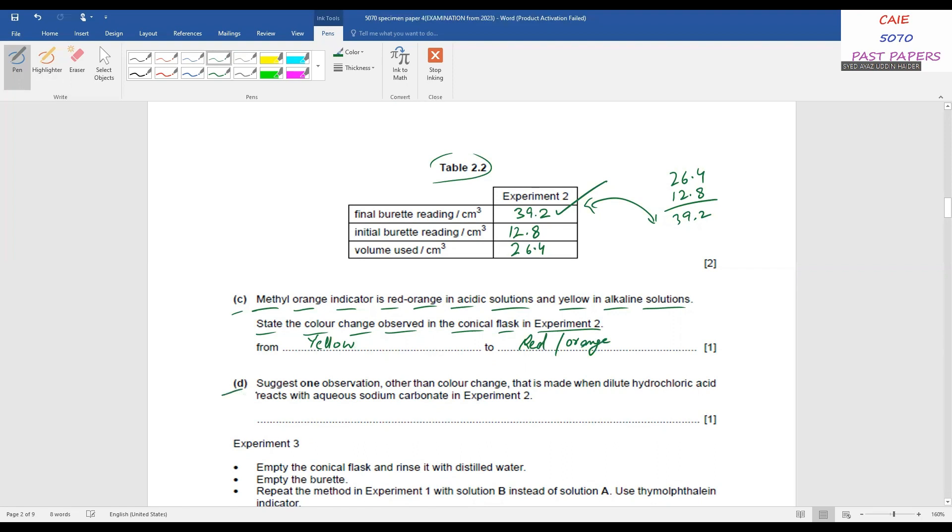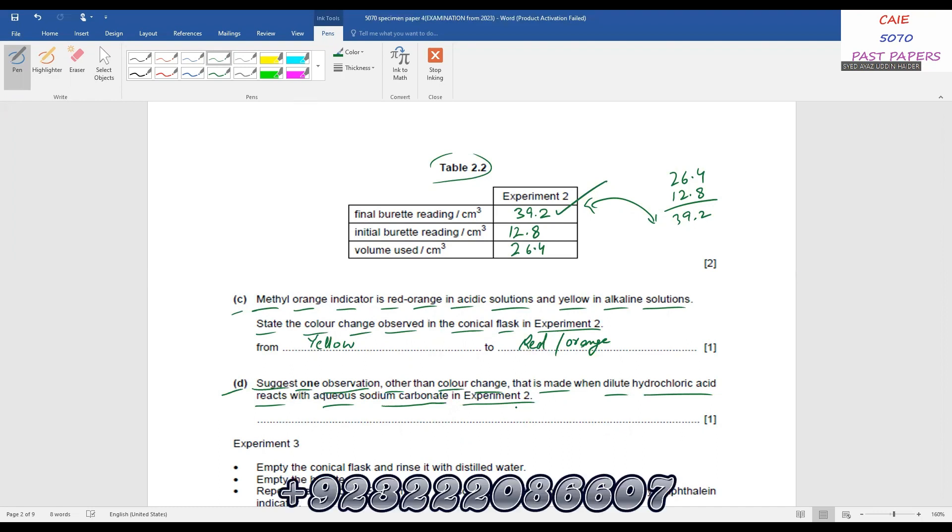Part D: Suggest one observation other than color change that is made when dilute hydrochloric acid reacts with sodium carbonate in experiment. It's very easy - when a metal carbonate reacts with acid, carbon dioxide is produced and you can observe it through bubbling or fizzing. So you write bubbles, fizzing, or even you can write effervescence.